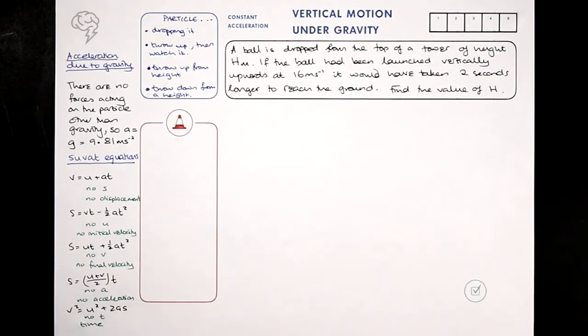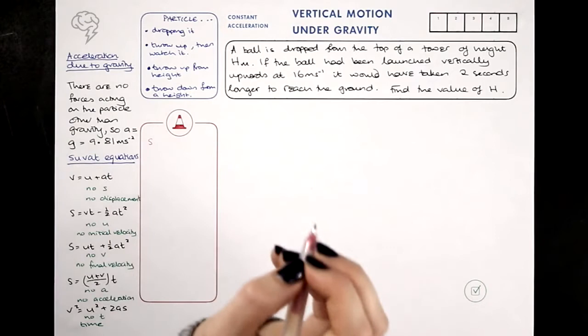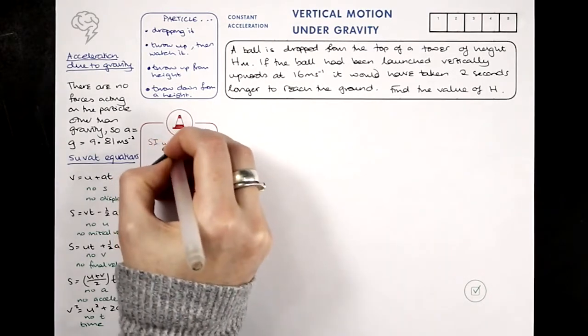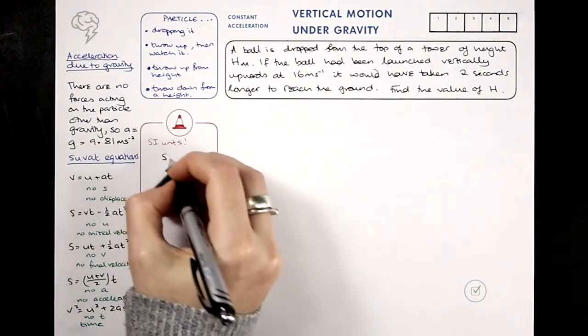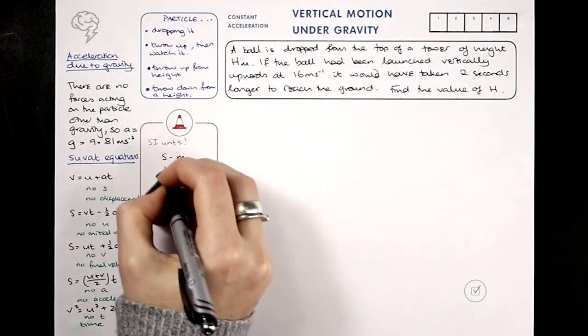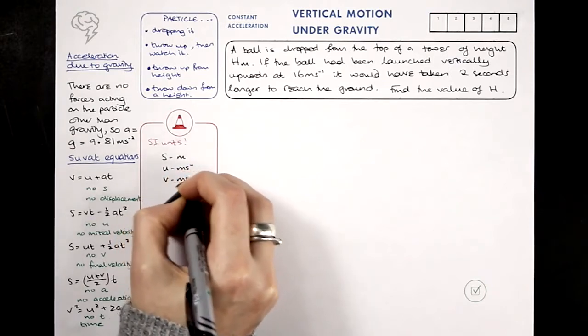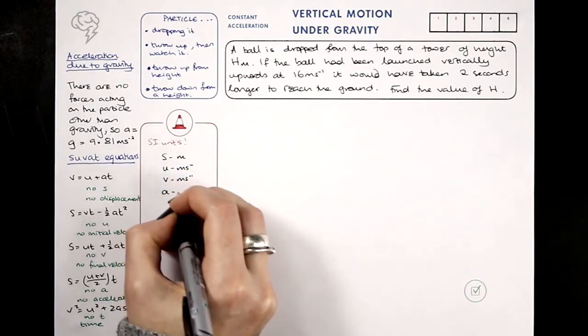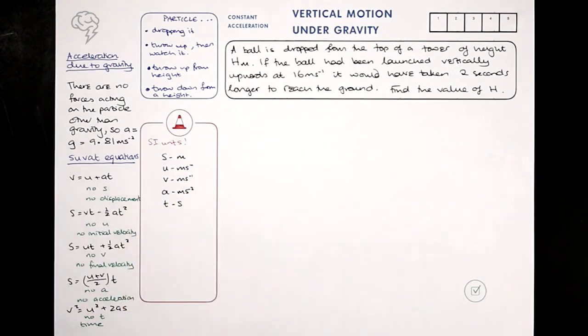It's important to use SI units here, this is one of the things to check when you're looking at the question. So our displacement S has to be measured in meters, our initial velocity in meters per second, our final velocity in meters per second, our acceleration in meters per second per second, and our time in seconds.